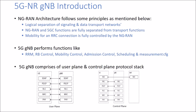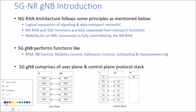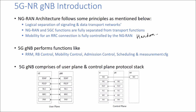5G NR GNodeB introduction. The NGRAN architecture follows some principles: it has the logical separation of signaling and data transport networks. NGRAN and the 5G core functions are fully separated from the transport functions. And the mobility of an RRC connection is fully controlled by the NGRAN GNodeB — that means handovers are totally controlled by our 5G GNodeB.